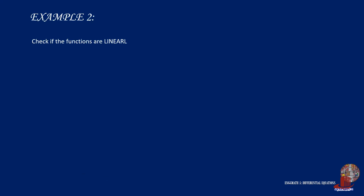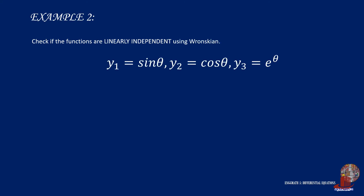The next example is for three functions: y1 equal to sin theta, y2 equal to cos theta, and y3 equal to e raised to theta. Arrange them as elements in the first row and take the derivatives for the succeeding rows. The derivative of sin theta is cos theta, and the second derivative is negative sin theta. The pattern is similar for the second column, and e raised to theta has the same value as its derivatives.